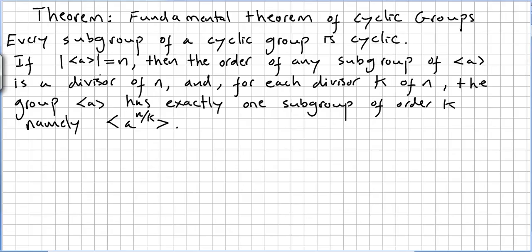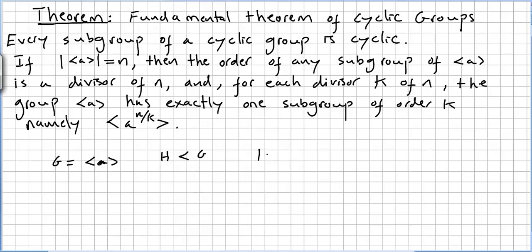We are going to use now the theorem we saw in the previous video. We call it the Fundamental Theorem of Cyclic Groups. Every subgroup of a cyclic group is cyclic. So if G is a cyclic group, meaning there is an element A that generates G, and if H is a subgroup of G, it means that H is also generated by a certain element. So H, the subgroup, is cyclic.